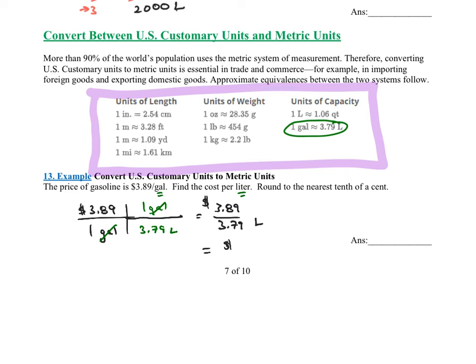And it says round to the nearest tenth of a cent. So tenth of a cent. Cent is two decimal places in terms of dollars, right? So I'm getting 1.02, and then that would be cents, but then it's tenth of a cent, so we have to add one more decimal place. So if I round it properly, I'm getting 1.026, and that's dollars per liter.